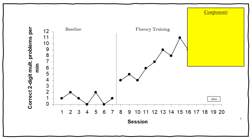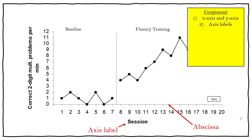The most common graph you're going to use is a line graph, and there are some specific components you need to have. First, you need your x and y axes and their axis labels. Your x-axis is the horizontal line at the bottom, and typically it shows how frequently data were collected — usually a measure of time, such as sessions, days, or dates.